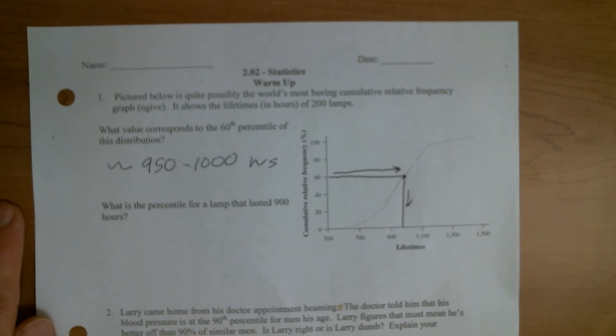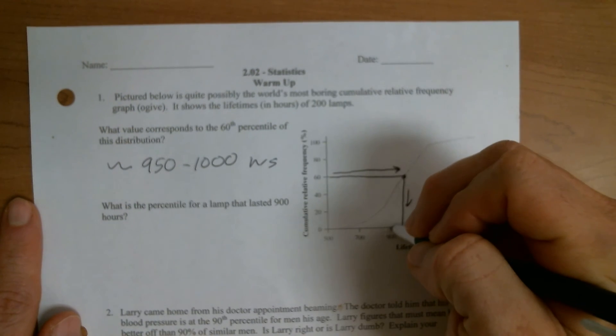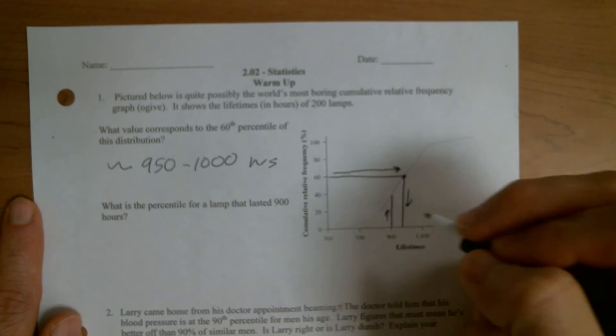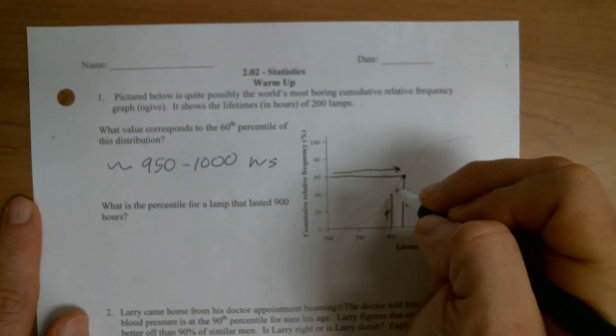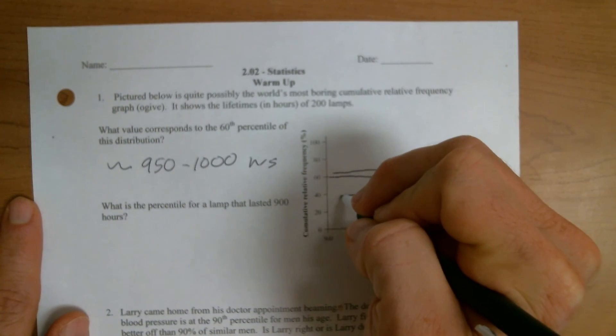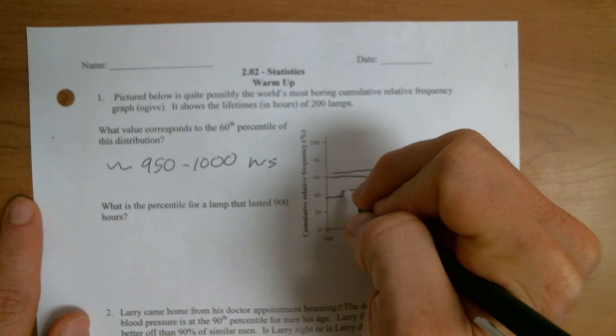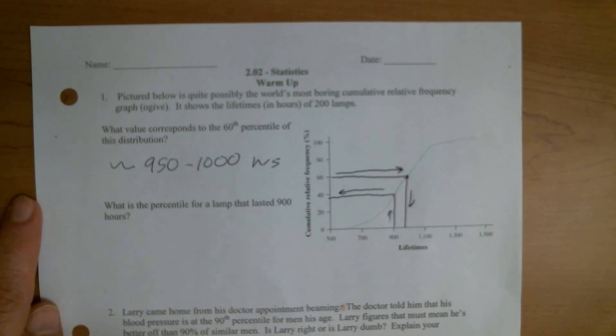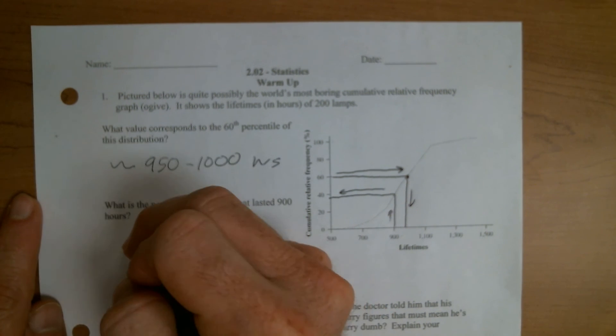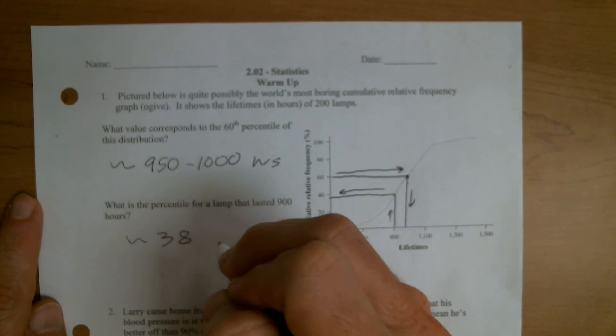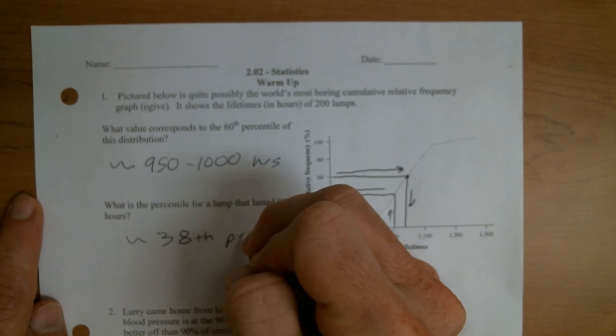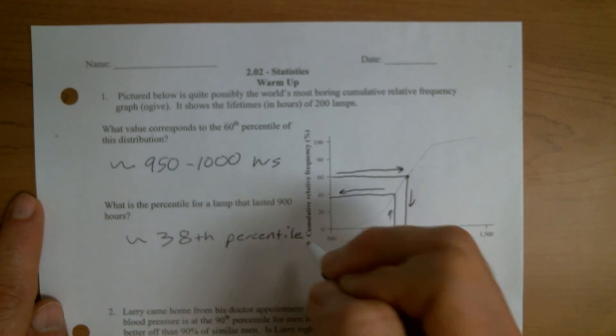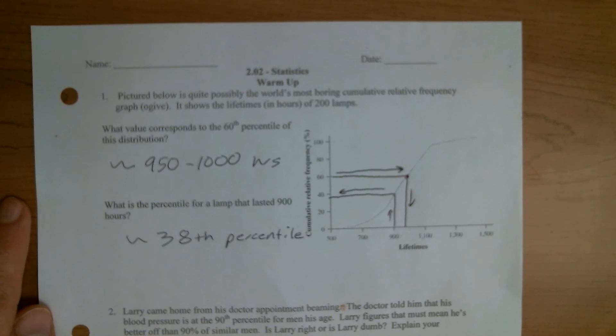What is the percentile for a lamp that lasted 900 hours? So this is us going in the other direction. So here we would start at the 900 and go up. When we hit the graph, then we go over and we read the percentile that way. So again, I don't think my lines are perfectly straight, but you're probably somewhere in like the 38 percentile. Again, if you're a little higher, if you're a little lower, I'm just going to base it off the lines that you drew.